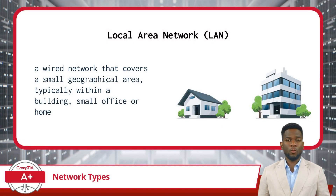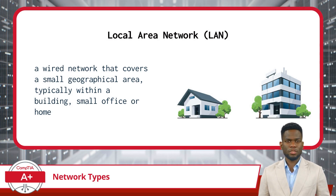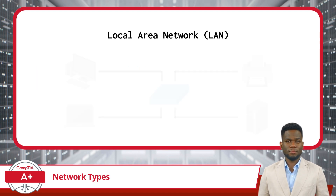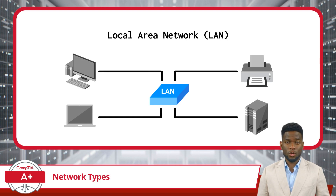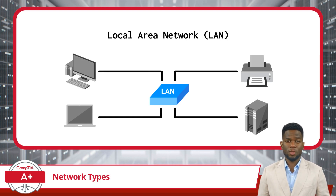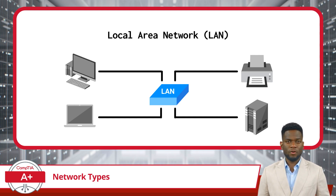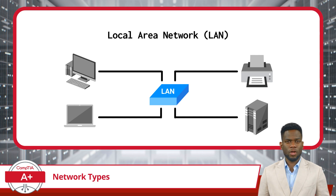Next, we have Local Area Networks, or LANs. A LAN is a network that covers a small geographical area, typically within a building, small office, or home. This type of network allows devices to share resources, such as files or printers, within a single, contained environment. LANs are typically wired, using Ethernet cables to connect computers and other devices to a central router or switch, but they can also be wireless.